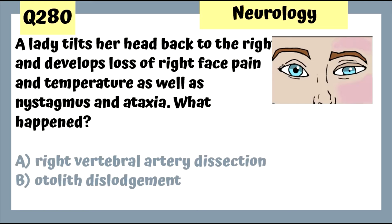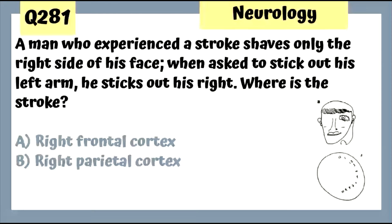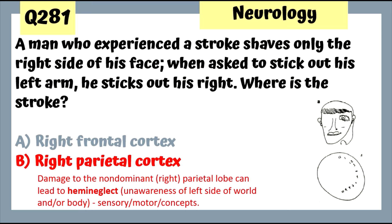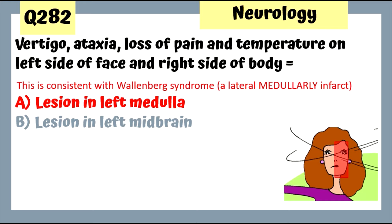Question 280: A lady tilts her head back to the right and develops loss of right face pain and temperature, nystagmus, and ataxia — right vertebral artery dissection presenting with vertigo and hemisensory loss. Question 281: A man who experienced a stroke shaves only the right side of his face and sticks out the wrong arm — this is the right parietal cortex, leading to hemi-neglect where a person is unaware of one side of their entire world. Question 282: Vertigo, ataxia, loss of pain and temperature on the left side of face and right side of body — Wallenberg syndrome, a lateral medullary infarct.